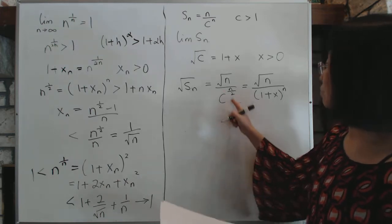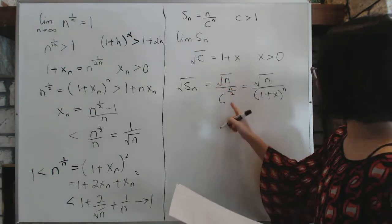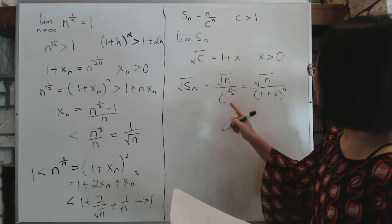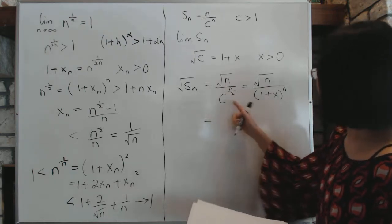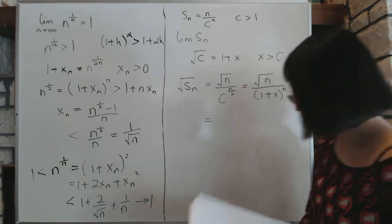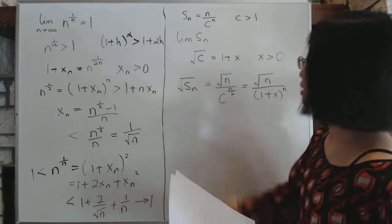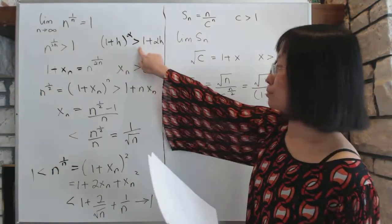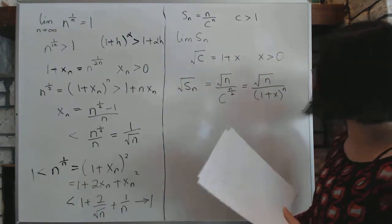And then, which explains why we wanted to define square root of c. It's because we're going to go here. But this isn't the end yet. But next, we have 1 plus x to the power n. As always, it's bigger. Use this particular inequality, except that this is now in the denominator.